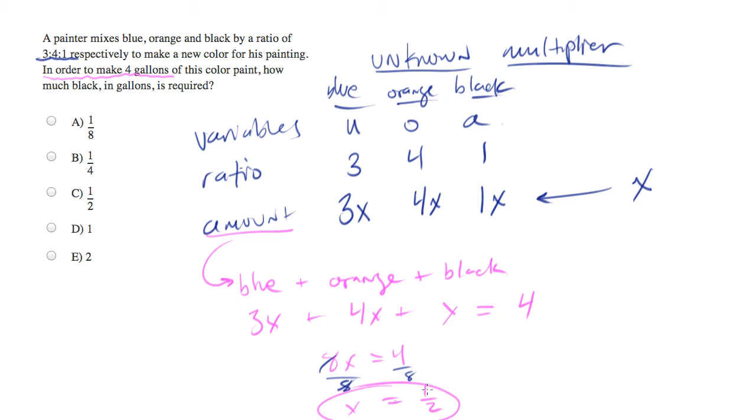So now we know the unknown multiplier is 1 half. And we've been asked how many gallons of black are required. Now the amount of black will be found right here, which is 1 times x.